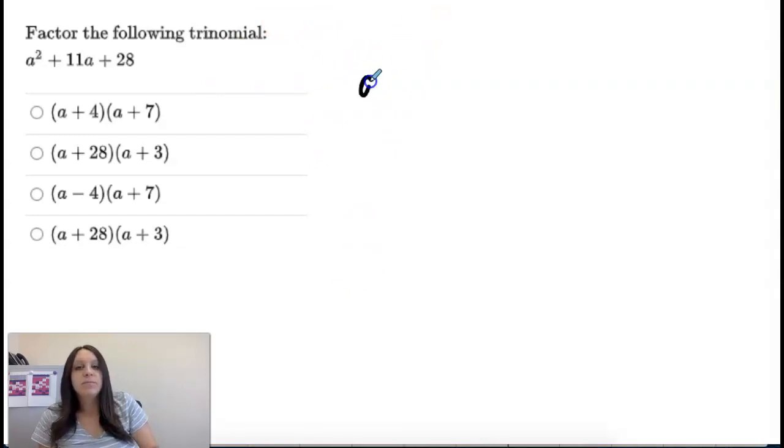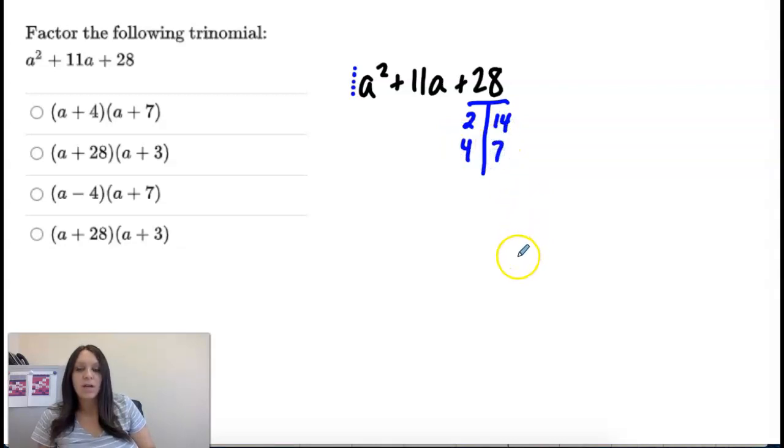So when we're factoring a quadratic where a is 1, this is kind of confusing because this is a, but there's not a number here. There's an invisible one. Then we look at our last number, our 28, and we think of numbers that multiply to 28. So 2 times 14 is 28. 7 times 4 is 28. That's it. I want to pick numbers that multiply to 28 that I can add or subtract to 11. So these two numbers add to 11. So these are the numbers that are going to go in my parentheses out here. My binomials.